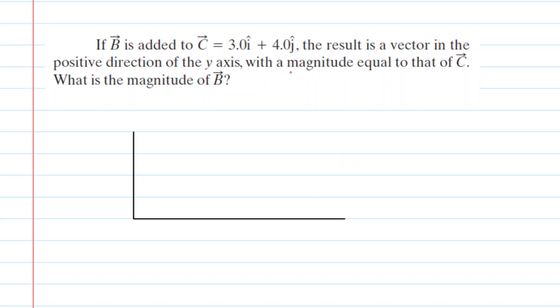Our first step is to figure out what the magnitude of vector C is. So let's take a look at vector C and we can see that the x component of vector C is equal to positive 3 and the y component is equal to positive 4.